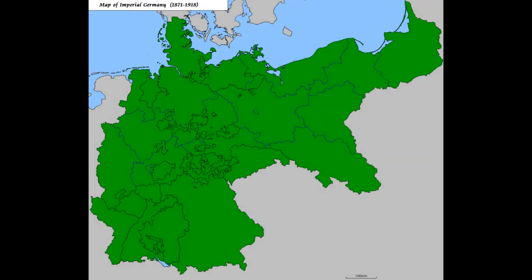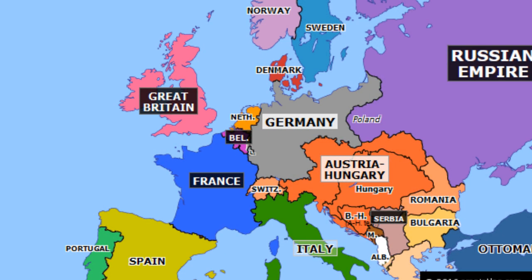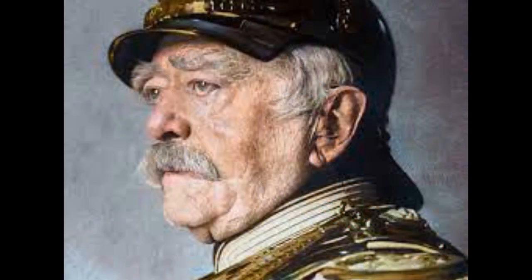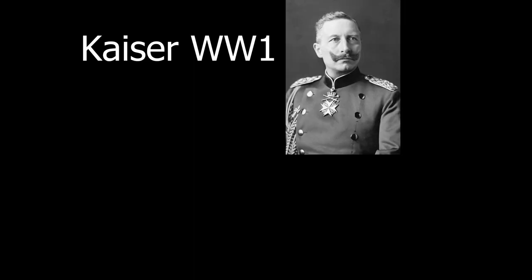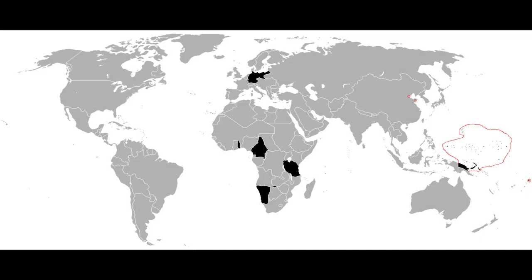Germany prior to World War 1 was only recently unified in 1871 and was in the process of setting itself up as a European power to contest France, Russia, etc. This was mostly done by Bismarck, who was the current chancellor of Germany at the time. He controlled the foreign policy and focused on keeping Germany at peace. The country worked with a monarch, but also a chancellor and a constitution, but the monarch held the most power, being able to pick a new chancellor whenever they wanted. Germany in the 19th century had become a huge empire with colonies in Africa and Asia.